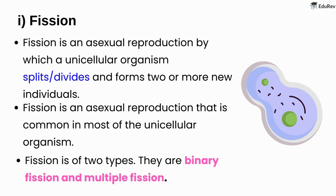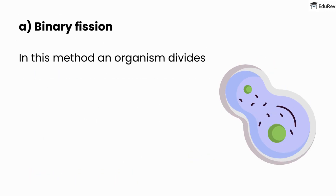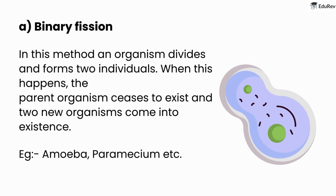Fission is of two types: binary fission and multiple fission. In binary fission, an organism divides and forms two individuals. When this happens, the parent organism ceases to exist and two new organisms come into existence. Examples include amoeba, paramecium, etc.